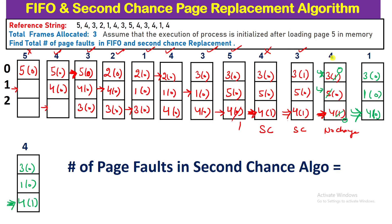Counting all page faults using the Second Chance algorithm — excluding the initial load of page 5: 1, 2, 3, 4, 5, 6, 7, 8. Total page faults using Second Chance are 8. So FIFO gave 9 page faults and Second Chance gave 8. I hope you've understood how we counted page faults in both algorithms. If you have any questions, comments, or suggestions, please write in the comment box, like and share the video, subscribe to the channel, and press the bell icon. In the next video we'll see the C and C++ implementation of the Second Chance page replacement algorithm.